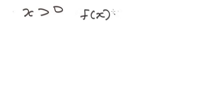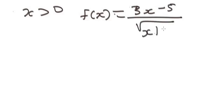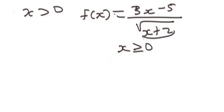Now let's take another example: f of x equals (2x minus 5) over the square root of (x plus 2). To find the domain, the expression under the square root must be greater than or equal to zero, but since it's in the denominator, x cannot make it equal to zero.